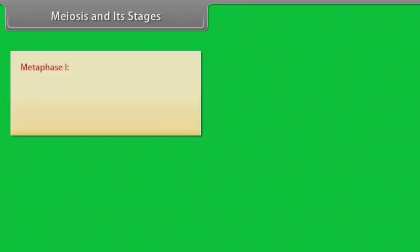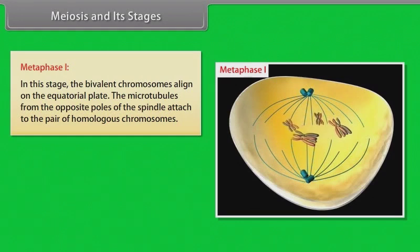After completion of prophase I, metaphase I takes place. In this stage, the bivalent chromosomes align on the equatorial plate. The microtubules from the opposite poles of the spindle attach to the pair of homologous chromosomes.